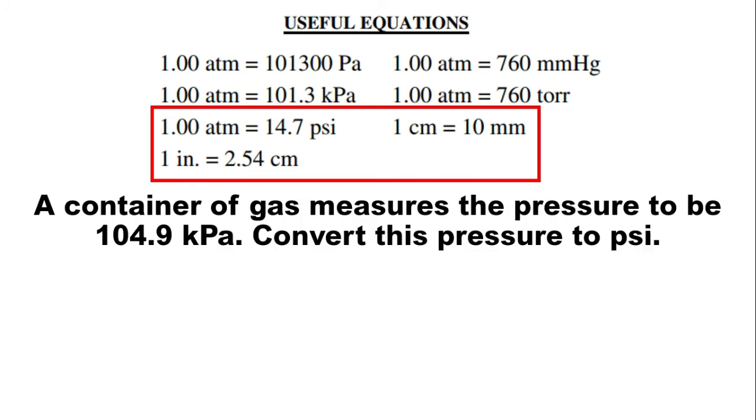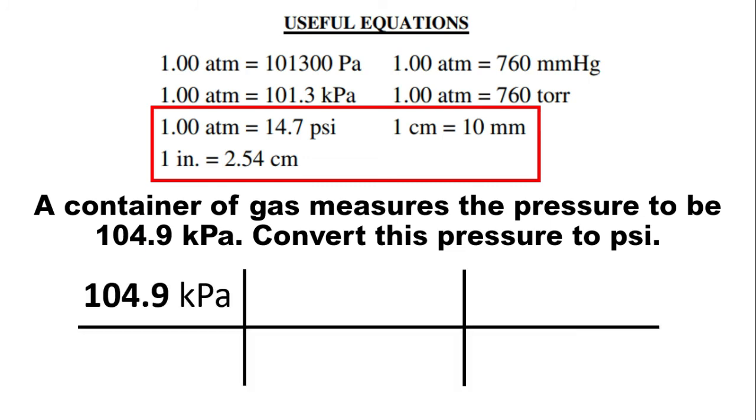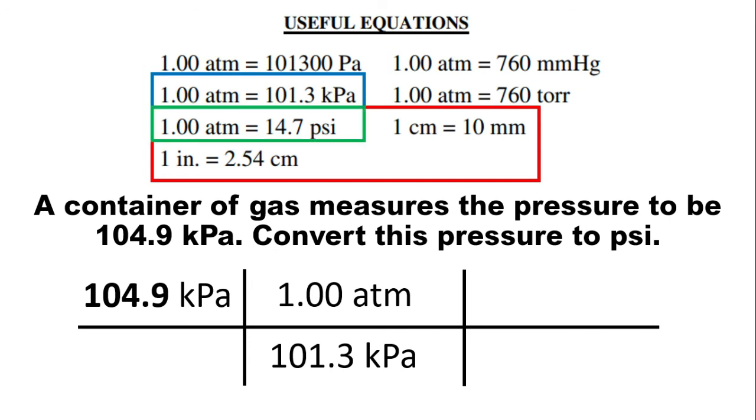So let's have an example. A container of gas measures the pressure to be 104.9 kilopascal. Convert this pressure into psi. Again, we start with the t-table. So 104.9 to the upper left. Then using this equation, just copy it, cancel kPa. So we're now in atm. And we're looking for psi. So we'll use this. So copy it, then do the math.